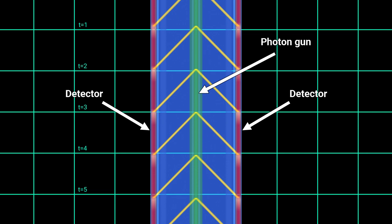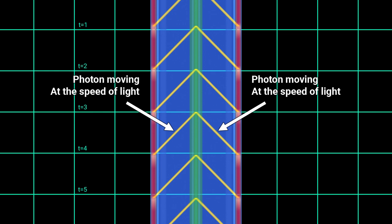These vertical lines in the diagram were traced by the photon gun and the detectors. They are called world lines. Vertical world lines mean that these objects don't move relative to our frame of reference. The photon's world lines are slanted by 45 degrees, indicating they are moving at the speed of light.